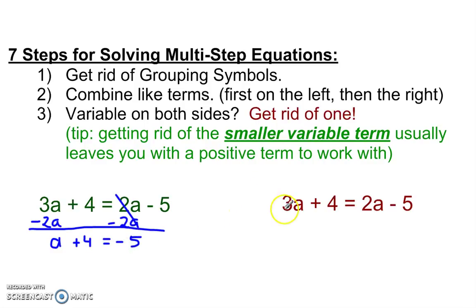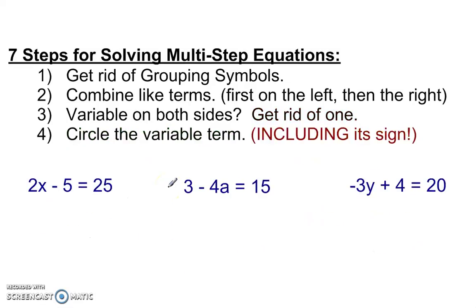It's not illegal to eliminate the larger one, but it'll leave you with a negative variable term. So if we eliminate 3a, I have to do the same thing on each side. Then I have 4 here is equal to negative 1a minus 5. The one time that you might want to do it that way around is if the smaller variable term is already by itself.